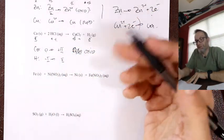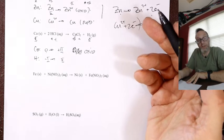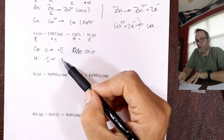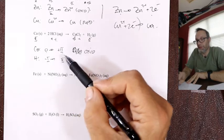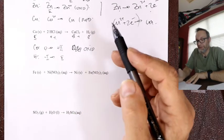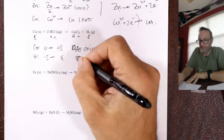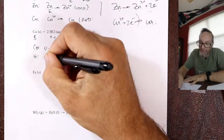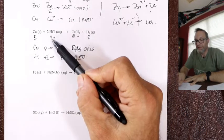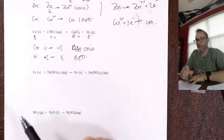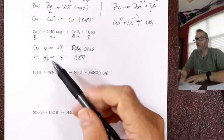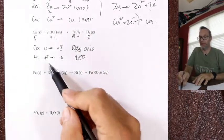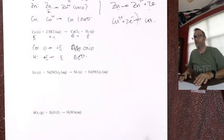Hydrogen went from a minus one in NaH to zero. Did it get more or less charge? It became more positive. Oxidation is loss, reduction is gain. Plus one to zero — it gained a minus, it went from plus one to zero. Reduction is gain — hydrogen was reduced. Always remember OIL RIG: oxidation is loss, reduction is gain of electrons.